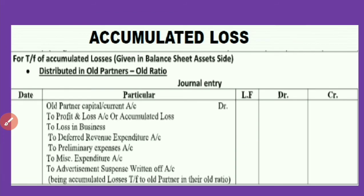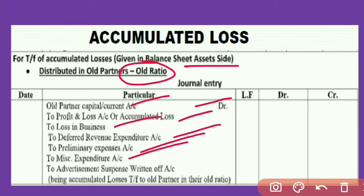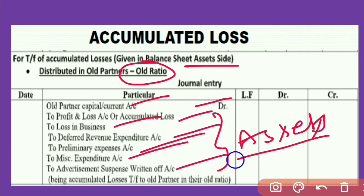For accumulated losses — if accumulated loss exists in the balance sheet, it will be given on the asset side of the balance sheet. It is also distributed among old partners in their old ratio. The partners' capital or current account is debited to profit and loss or accumulated loss, to loss in business, to deferred revenue expenditure if any, to preliminary expenses, to miscellaneous expenditure, to advertisement suspense account — if such items appear on the asset side of the balance sheet.